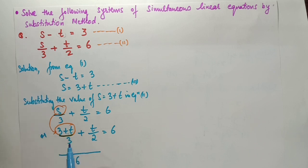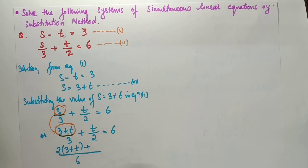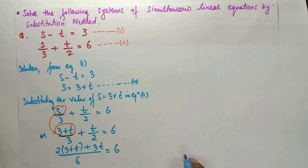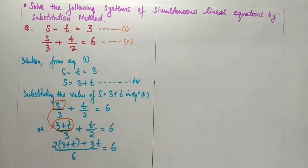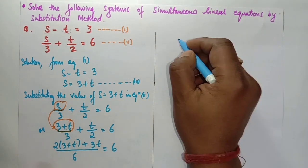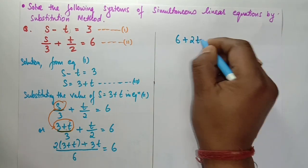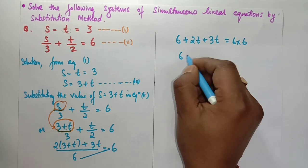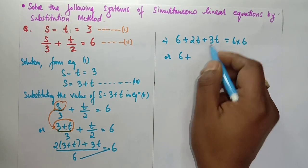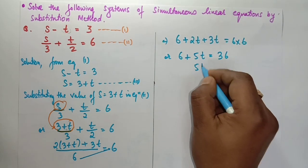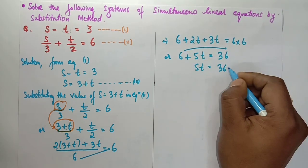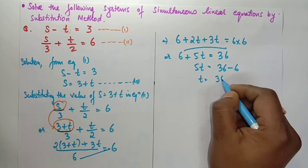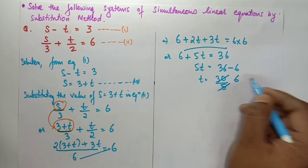Now take the LCM of 3 and 2, which is 6. Multiply through: 2 times (3 plus t) plus 3t equals to 6 times 6. That gives 6 plus 2t plus 3t equals to 36. So 5t equals to 36 minus 6, which is 30. Therefore 5t equals to 30.